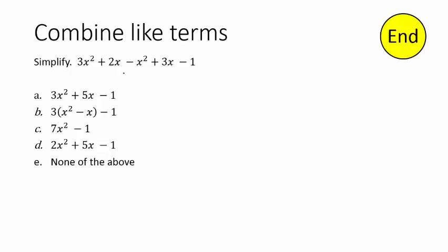Alright, we're combining like terms here. So we look at this entire statement. We need to combine everything that we can. So that means we're taking anything that has x squared in it, which would be these two terms here, and we're going to combine them. 3x squared minus an x squared is going to give us 2x squared.